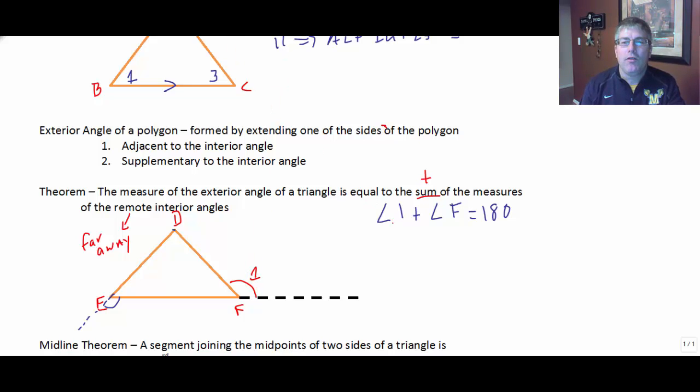And hopefully we know that angle 1 plus interior angle F here are supplements. They add up to 180. Well, we should also know from above that angle D plus angle E plus angle F also equal 180. That's the sum of the interior angles of a triangle.